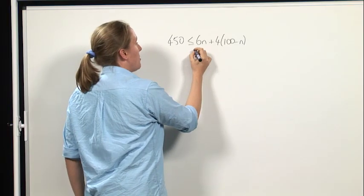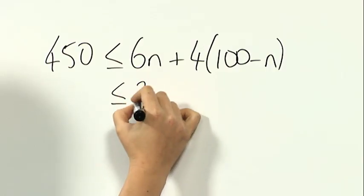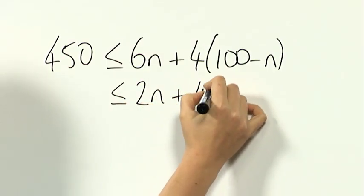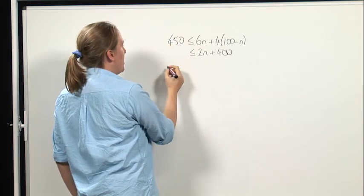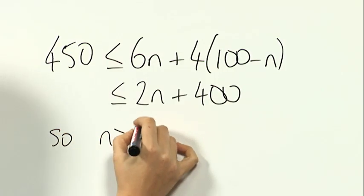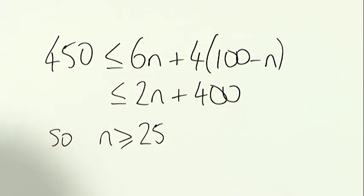If I just tidy this up a little bit, this gives us 2n plus 400. Now if I rearrange I discover that n is at least 25. So we have to have at least 25 good days.